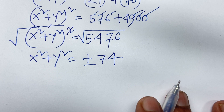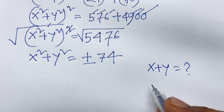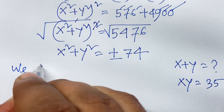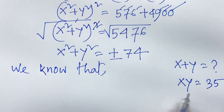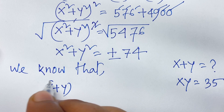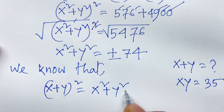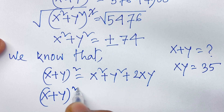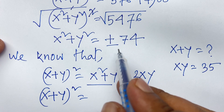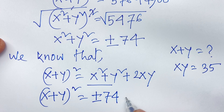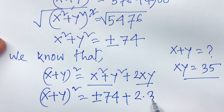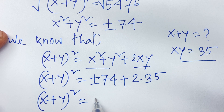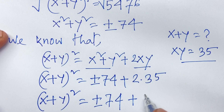Now our target answer is x plus y, and our second equation is xy equals 35. According to algebra rules, (x plus y) whole square equals x squared plus y squared plus 2xy. Now, (x plus y) whole square equals x squared plus y squared — which is plus or minus 74 — plus 2 times xy equals 35. So we have plus or minus 74 plus 70.